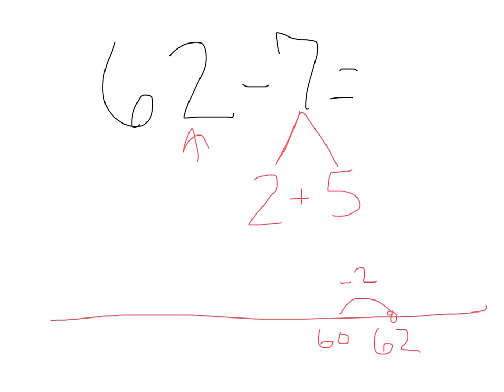And then when we're at 60, we can jump back 5 more places. And then we will land on 60, 59, 58, 57, 56, 55. So 62 minus 7 equals 55.